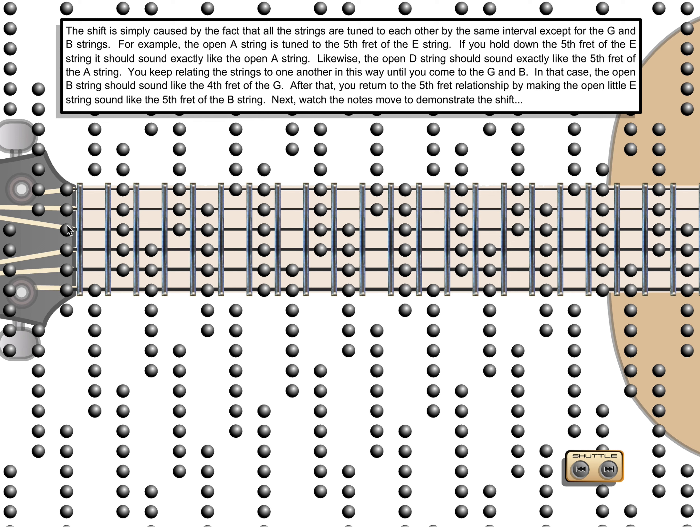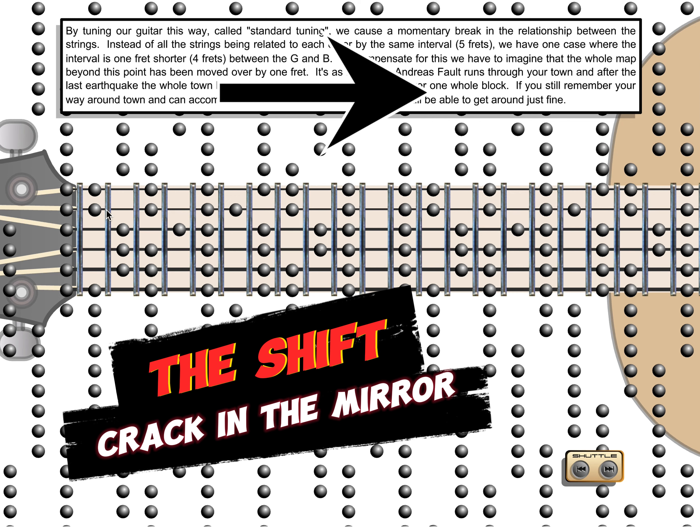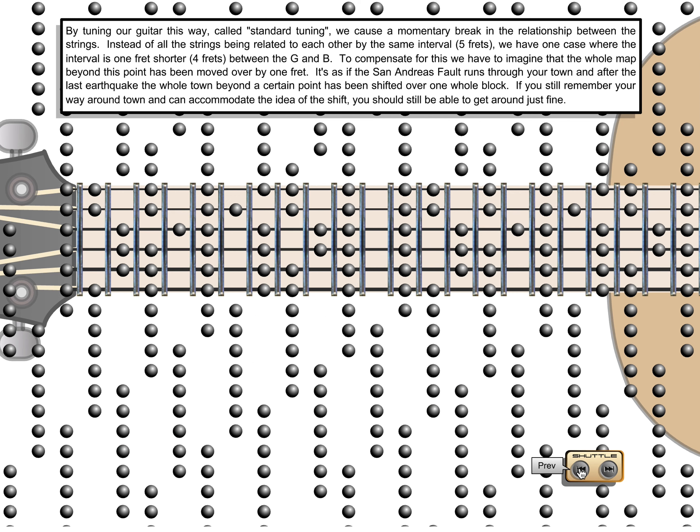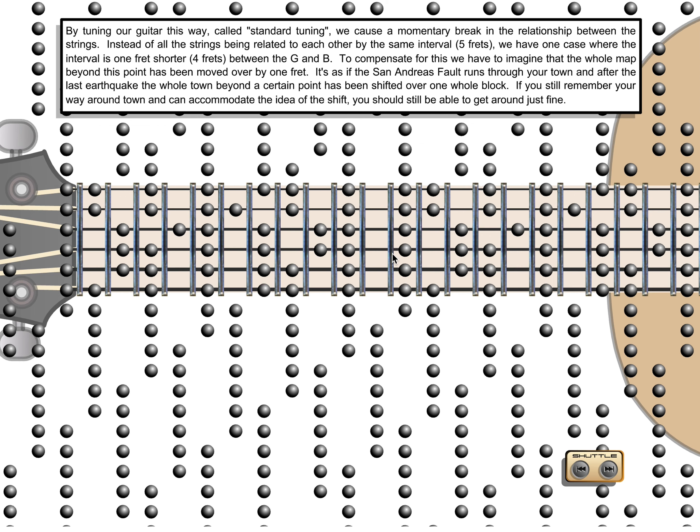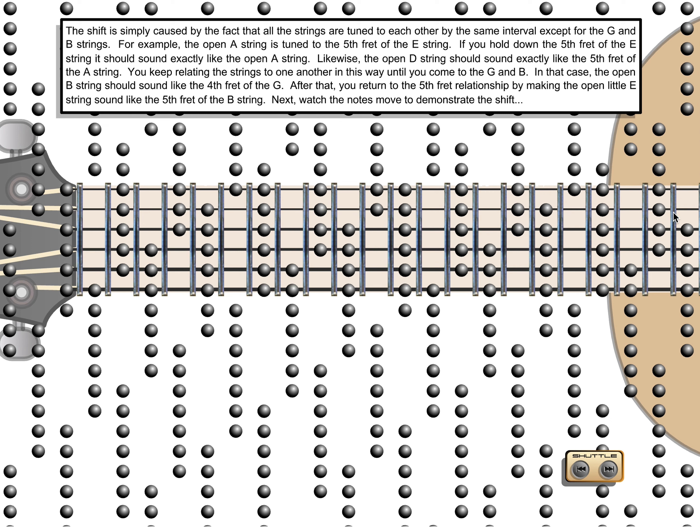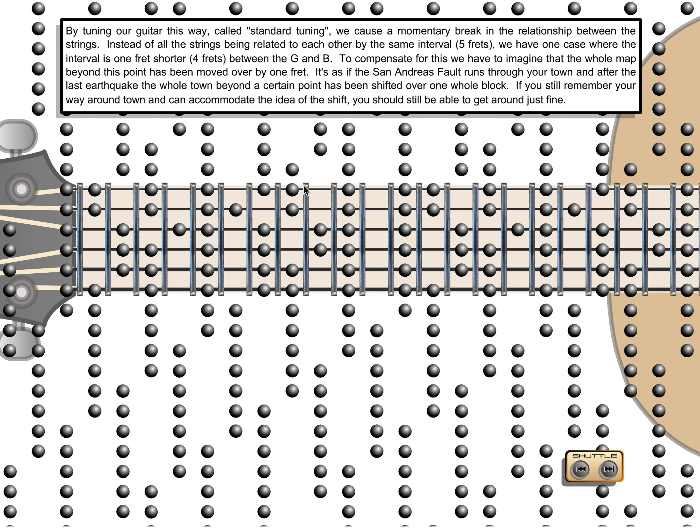Because the guitar has a funny tuning between the G and the B strings, there's a little phenomenon I call the shift. Let me go back and forth a couple times so you can see what's happening. This very predictable pattern breaks a little bit, everything beyond this. If these were streets, it's like the San Andreas fault cracked the entire city and everything beyond this point becomes just shifted over one fret. So if you can learn how to negotiate that with the same logic that the rest of the map has, then you can overcome it very easily. So there's the shift.